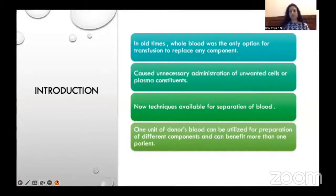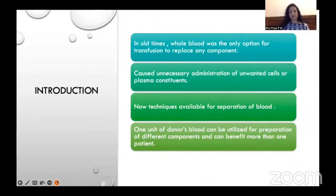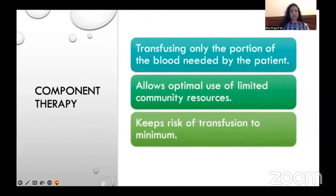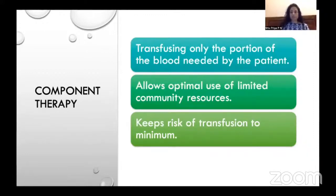In old times, whole blood was the only option for transfusion whenever any component had to be replaced, which meant unnecessary administration of unwanted cells or plasma constituents. Now techniques are available for separation of blood, whole blood is rarely used, and one unit of donor's blood can be utilized for preparation of different components benefiting more than one patient. Transfusing only the portion of blood needed by the patient is called component therapy — it allows optimal use of limited community resources and keeps the risk of transfusion to a minimum.